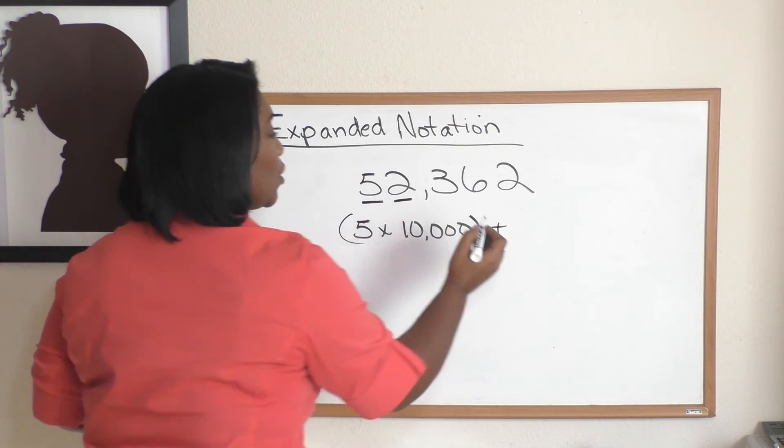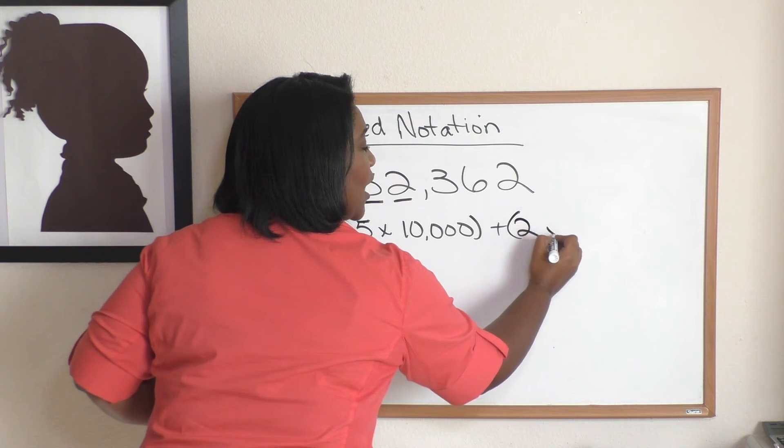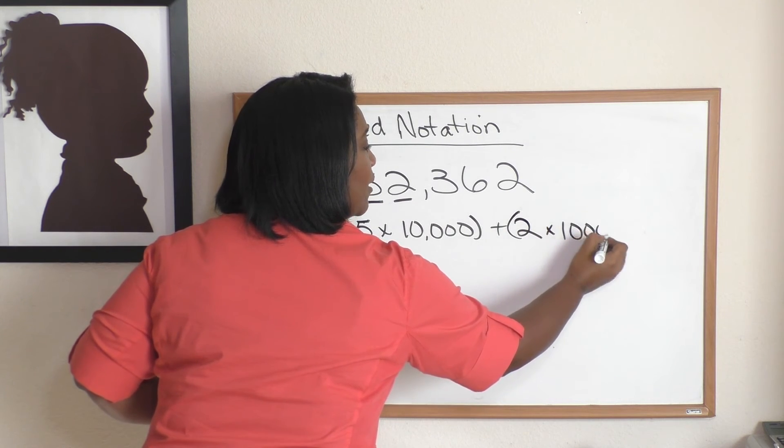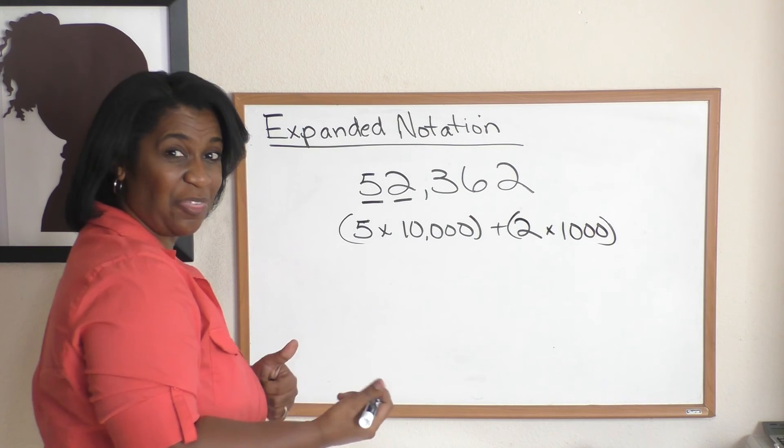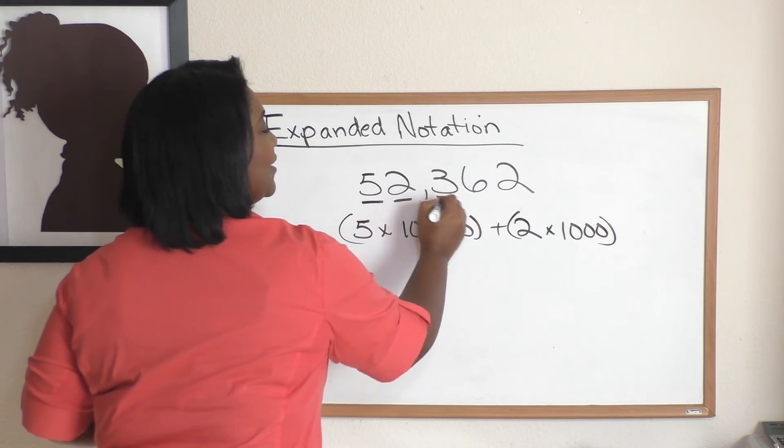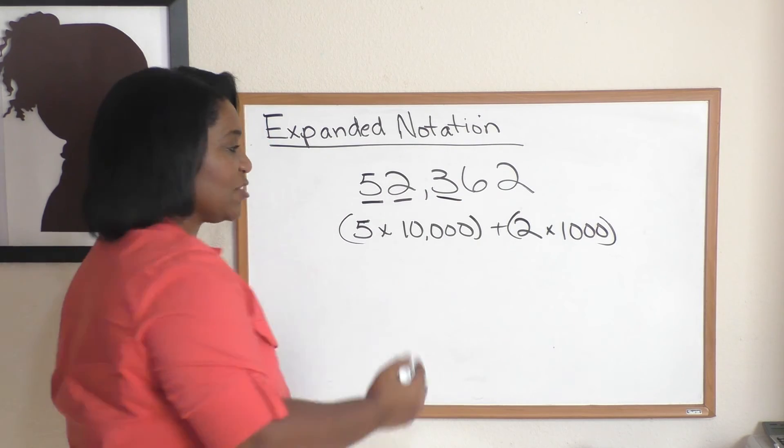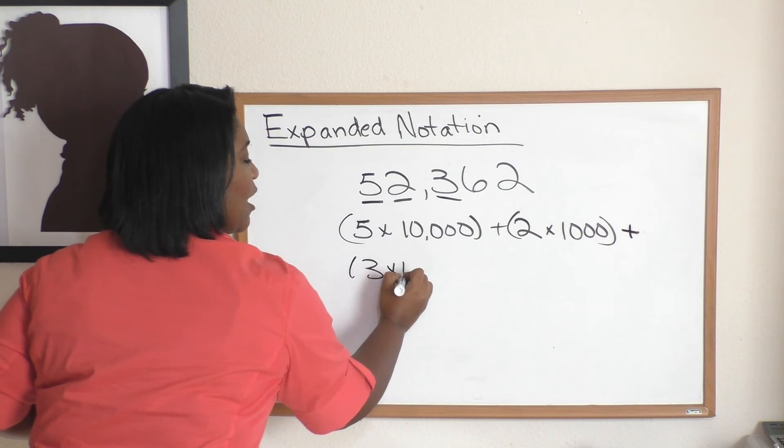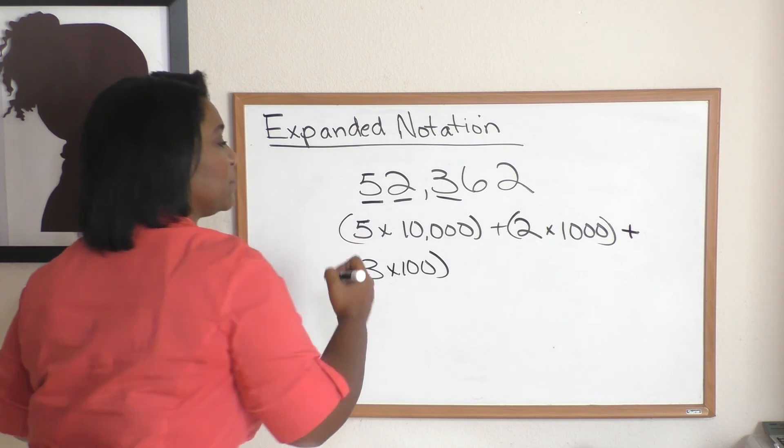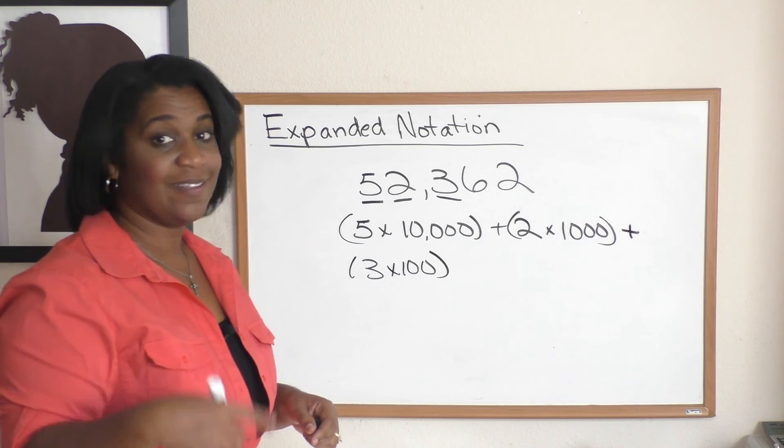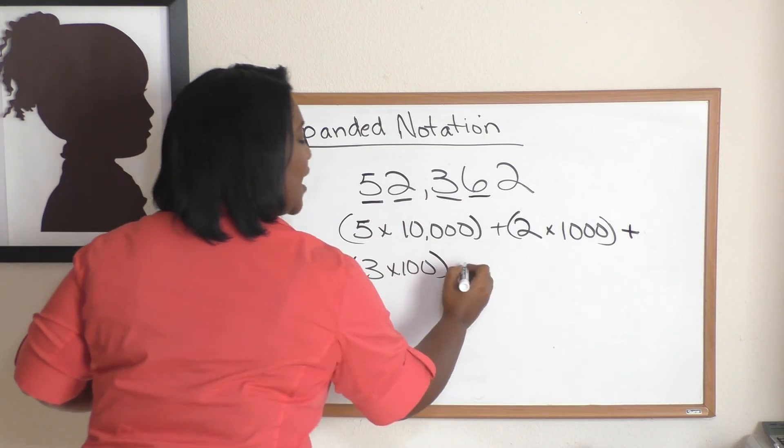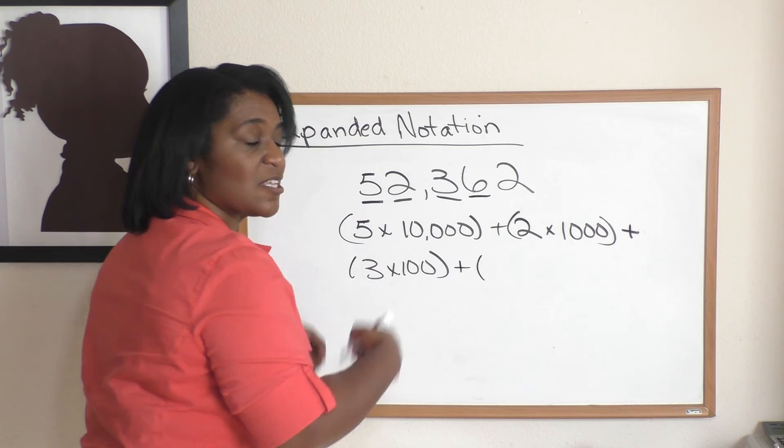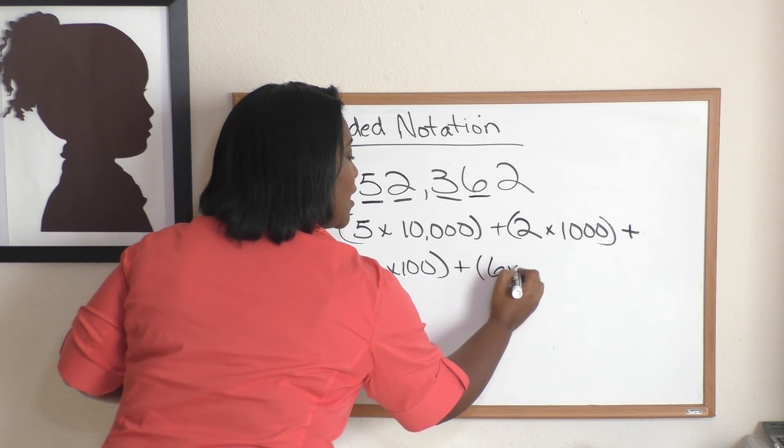You with me? Let's keep going. The three is in the hundreds place. Plus parentheses, three times one hundred. And the six is in the tens place. Plus parentheses, six times ten.